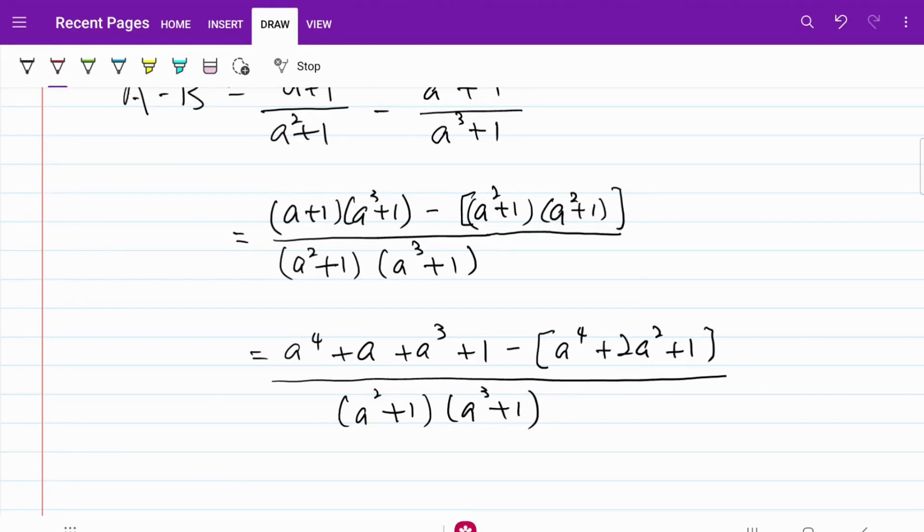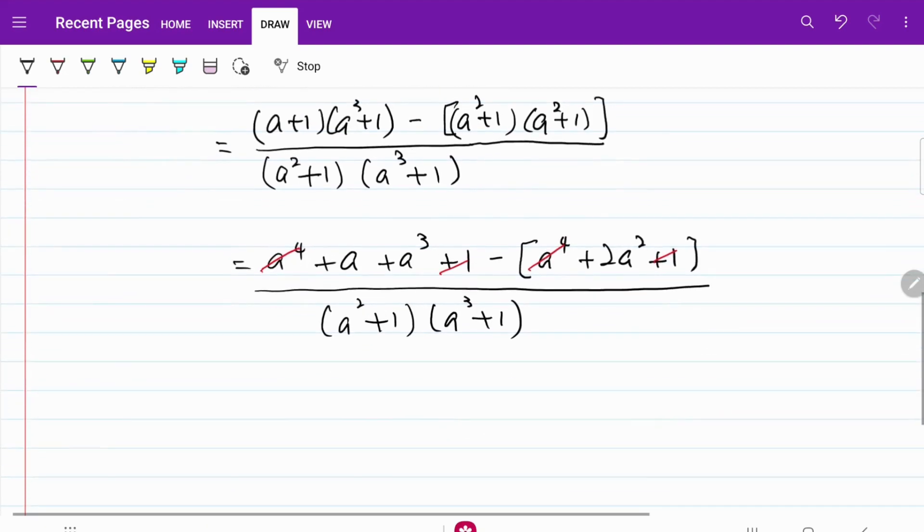From here, some of the terms on the numerator will cancel each other. I have a to the 4th power, a to the 4th power canceling each other, plus 1 minus 1 canceling each other. So in the end, what I have on the numerator will be a cubed plus a minus 2a squared over a squared plus 1, a squared plus 1.